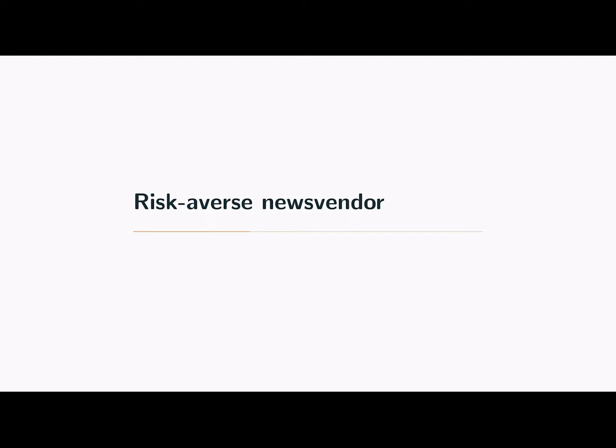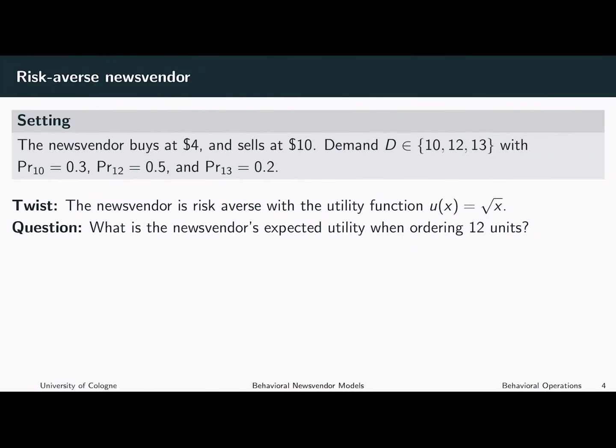Next we consider a risk-averse newsvendor. The setting remains the same, but now we assume this newsvendor is risk-averse and has a utility function given by the square root of x.